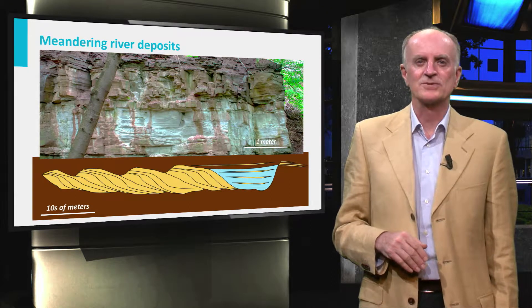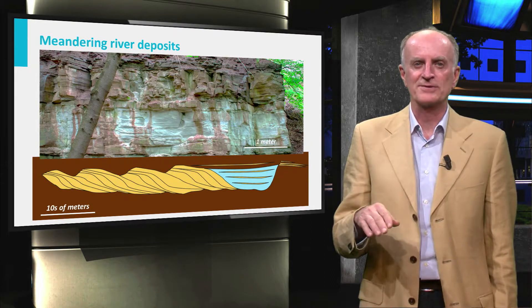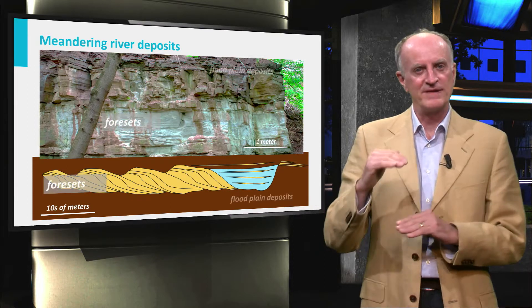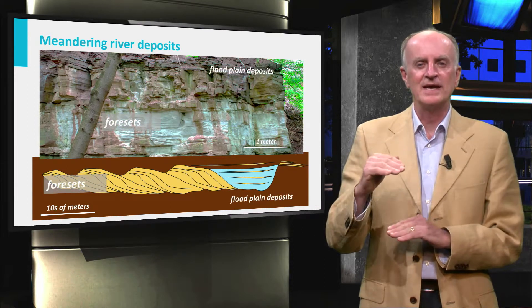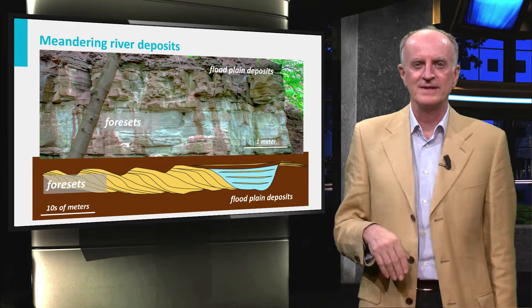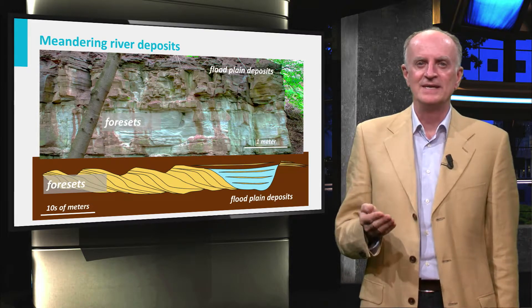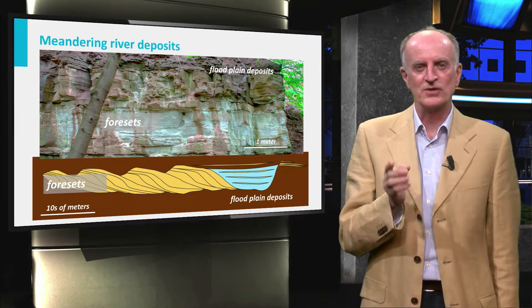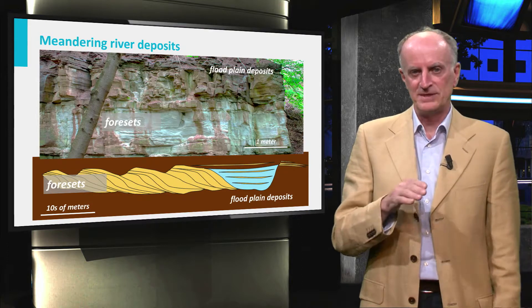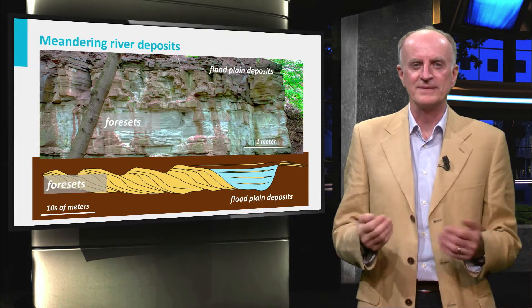Sedimentary successions associated with meandering rivers are characterized by large bodies of sands within finer-grained and more regular floodplain successions. The internal structure of the sand is characterized by foresets, which are non-horizontal layers dipping towards the deeper part of the former river bed.